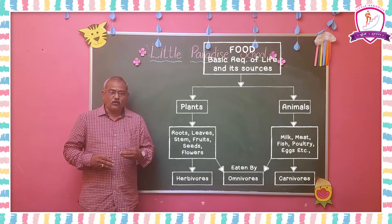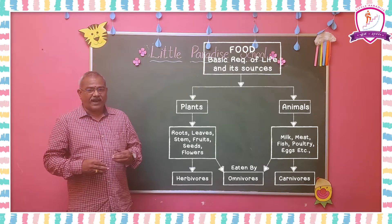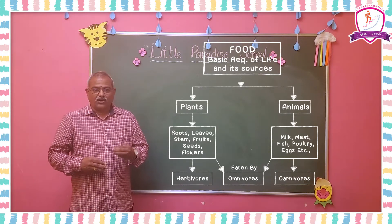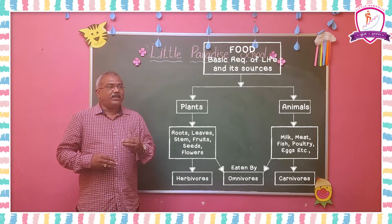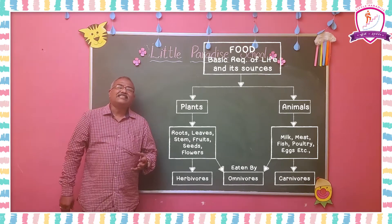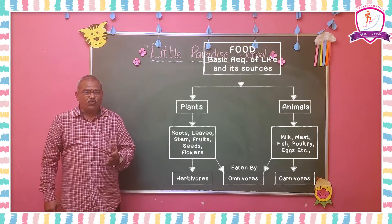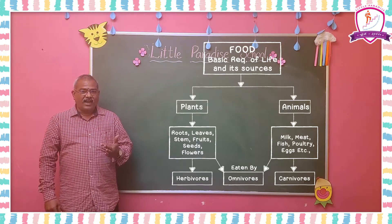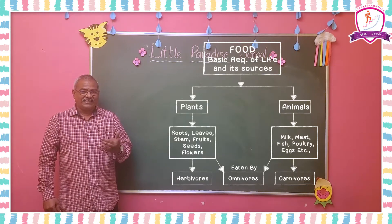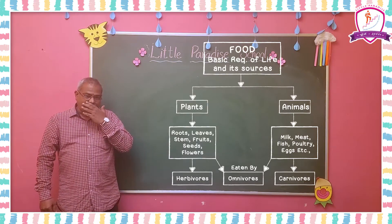So what do we get from plants? We get roots, leaves, stems, fruits, seeds, and flowers.